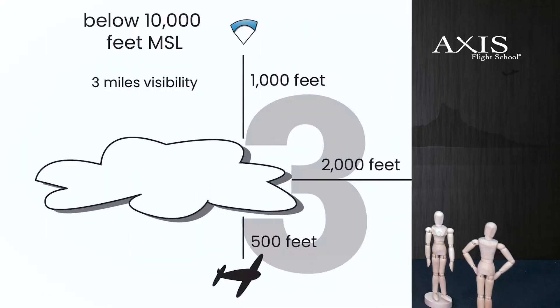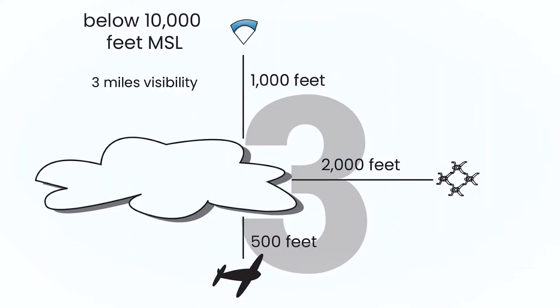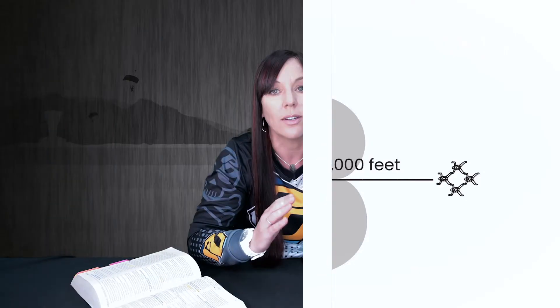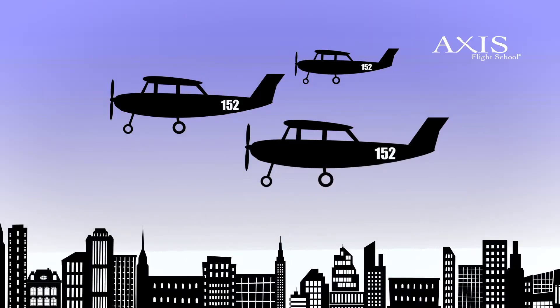Under 10,000 feet, you are required to have 3 miles visibility, 1,000 feet above, 500 feet below, and 2,000 feet horizontal distance. Here you can think of three low-flying Cessna 152s to remember those numbers.